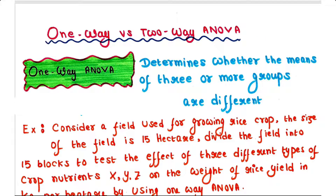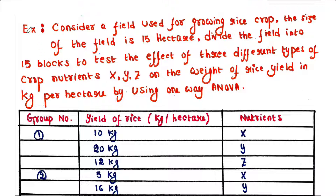Today we will focus on two-way ANOVA and the difference between one-way and two-way ANOVA. In two-way ANOVA we can also calculate the F-test value to estimate whether to accept or reject the null hypothesis. One-way ANOVA can determine whether the means of three or more groups are different or not.